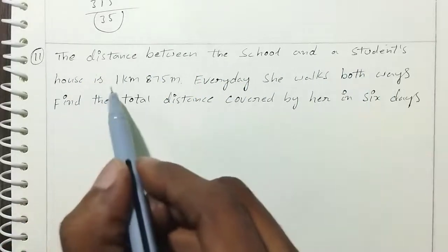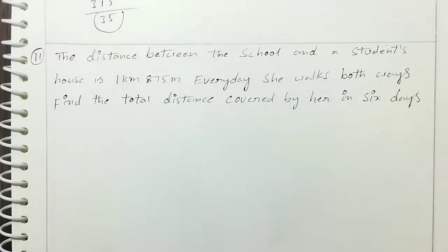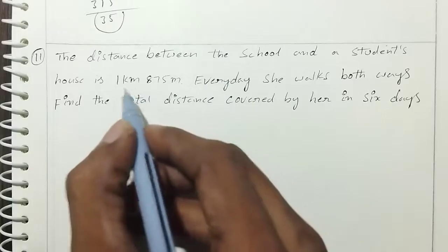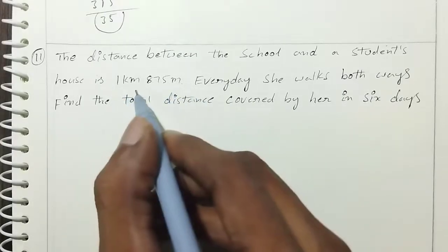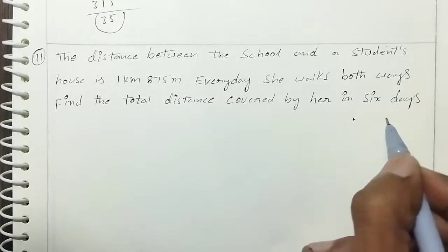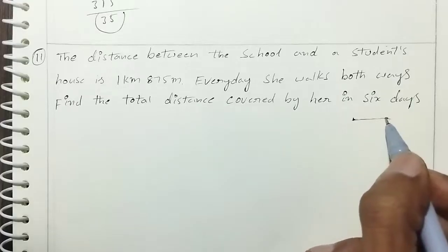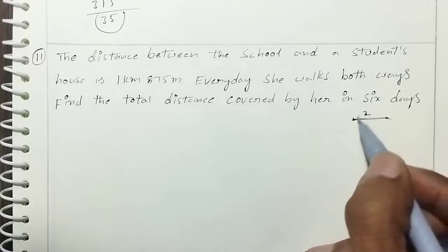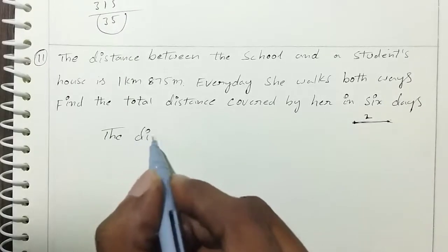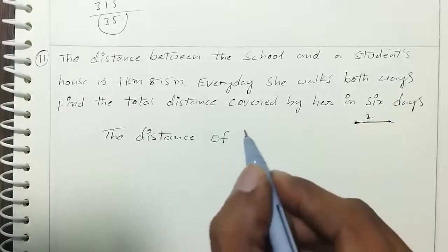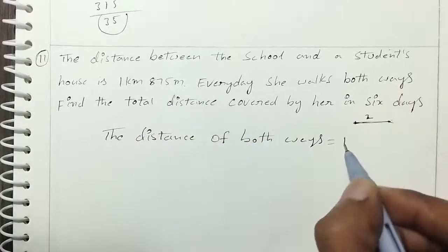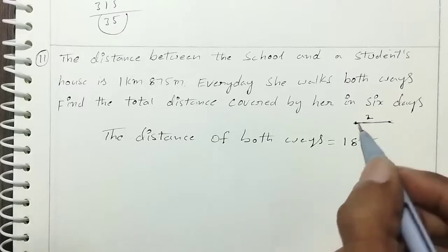The distance between the school and the student's house is 1 kilometer 875 meters. Every day she walks both ways. Find the total distance covered by her in 6 days. Since she walks both ways, the daily distance is 1 km 875 m × 2.